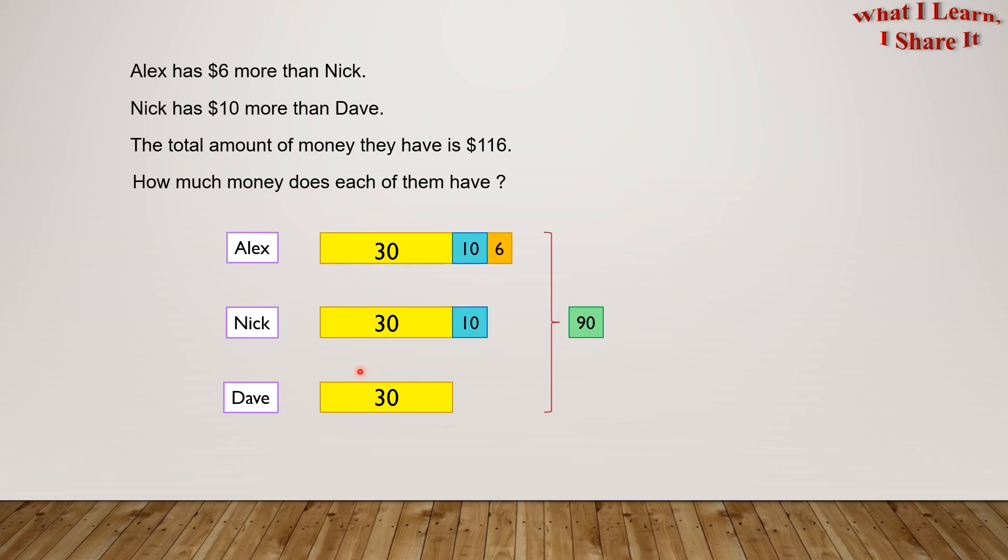Now, we can bring back the small boxes that we had crossed out earlier. This shows that Dave had 30, Nick had 30 plus 10, which equals 40, and Alex had 30 plus 10 plus 6 equals 46.